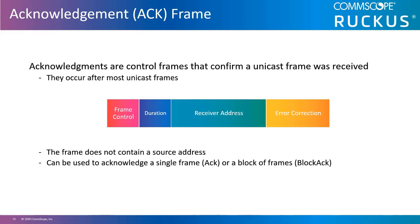Most 802.11 frames require an acknowledgement as an indication of successful delivery. Notification-only frames such as beacons or probe requests and responses do not require acknowledgement frames. There are two types of acknowledgement frames in 802.11 networks: acknowledgement frames, used when receiving a single frame, and block acknowledgement frames, used when receiving a series of frames. Before a block acknowledgement can be used, the station and access point must agree to its use through a block request/block exchange process.